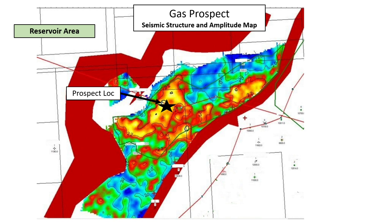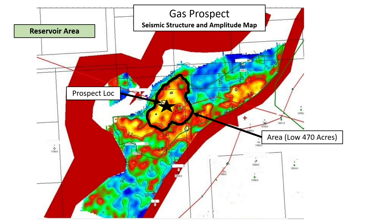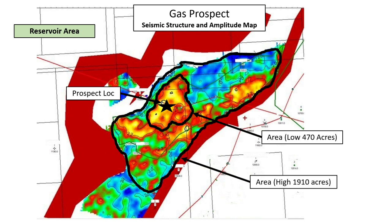The geologists and engineers look at this information and draw a polygon around the bright amplitude that's contiguous with the well location. We may say that could be the low-side area for the prospect at 470 acres, and we assign a probability to that. We can also say the reservoir — given its shape and the faults — could be as large as the high-side area of 1,910 acres. So now we have a range of areas for the drilling prospect.